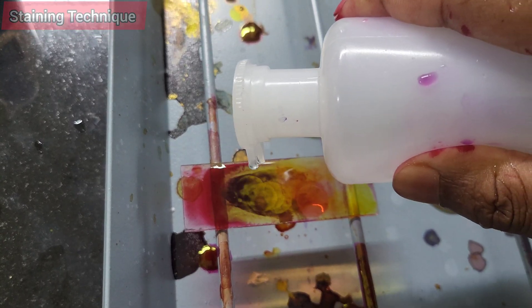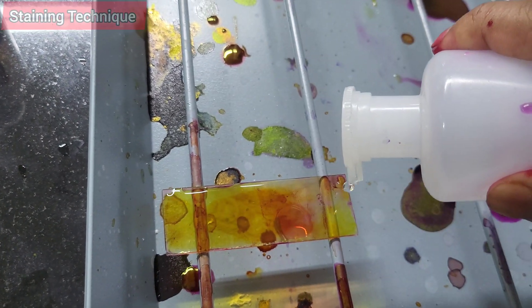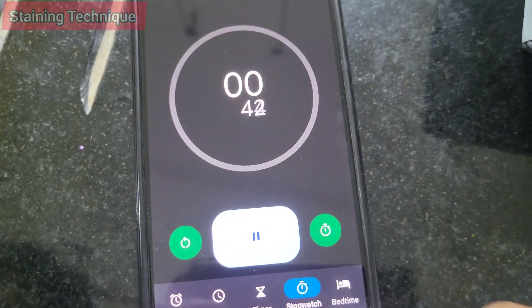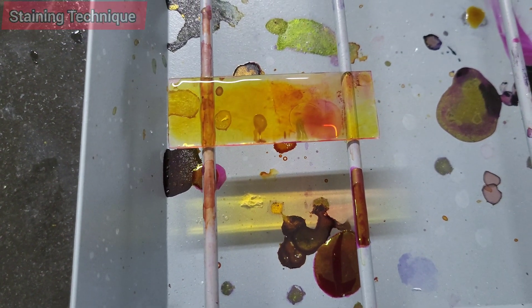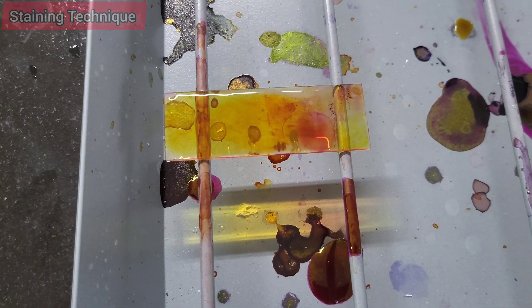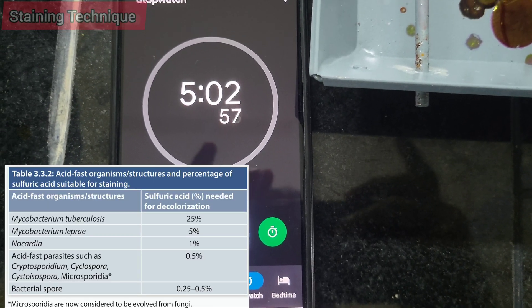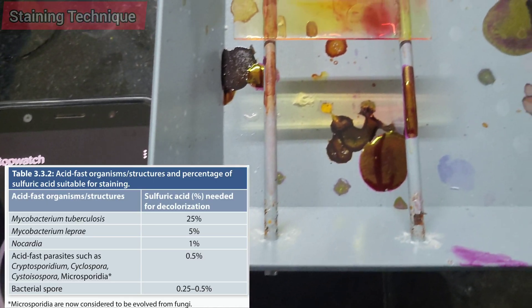If the slide is still red, reapply the sulfuric acid and wait for one to three minutes, and then gently rinse the slide with tap water. We can also use 3% HCl in ethanol as a decolorizer. The concentration of decolorizer depends upon the concentration of mycolic acid present in the cell wall. Higher the concentration, more is the acid-fastness, hence higher percentage of sulfuric acid is required for decolorization.